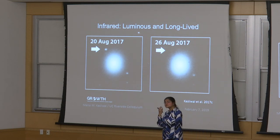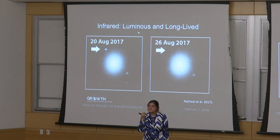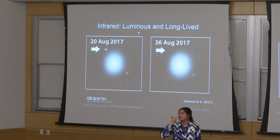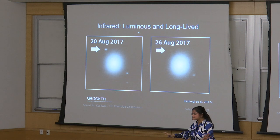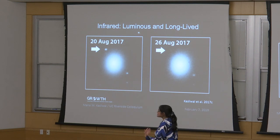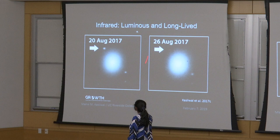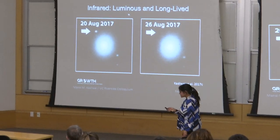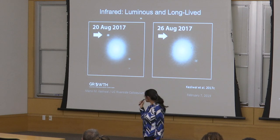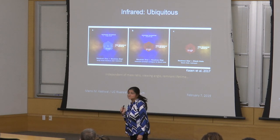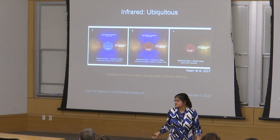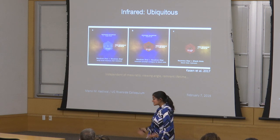These two Spitzer data points are absolutely critical to the question of whether heavy elements — including gold — were truly synthesized in this event. All of this is simply to motivate that the infrared, for nuclear physics reasons, is a very important piece of the electromagnetic spectrum. None of this understanding of heavy-element nucleosynthesis depends on any other wave band: it hinges on the infrared, on the fact that this very blue dot evolved into a very red dot and emission was sustained in the infrared.